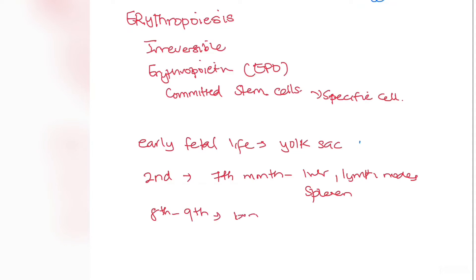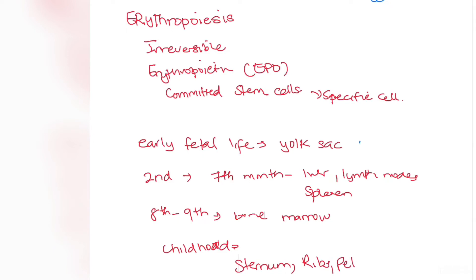During the eighth and ninth months, the bone marrow takes over as the major site of red cell production. In childhood, all bones participate in red blood cell formation, but with increasing age certain bones become inactive, and the sternum, ribs, and pelvis become the major sites of red cell production in adulthood.